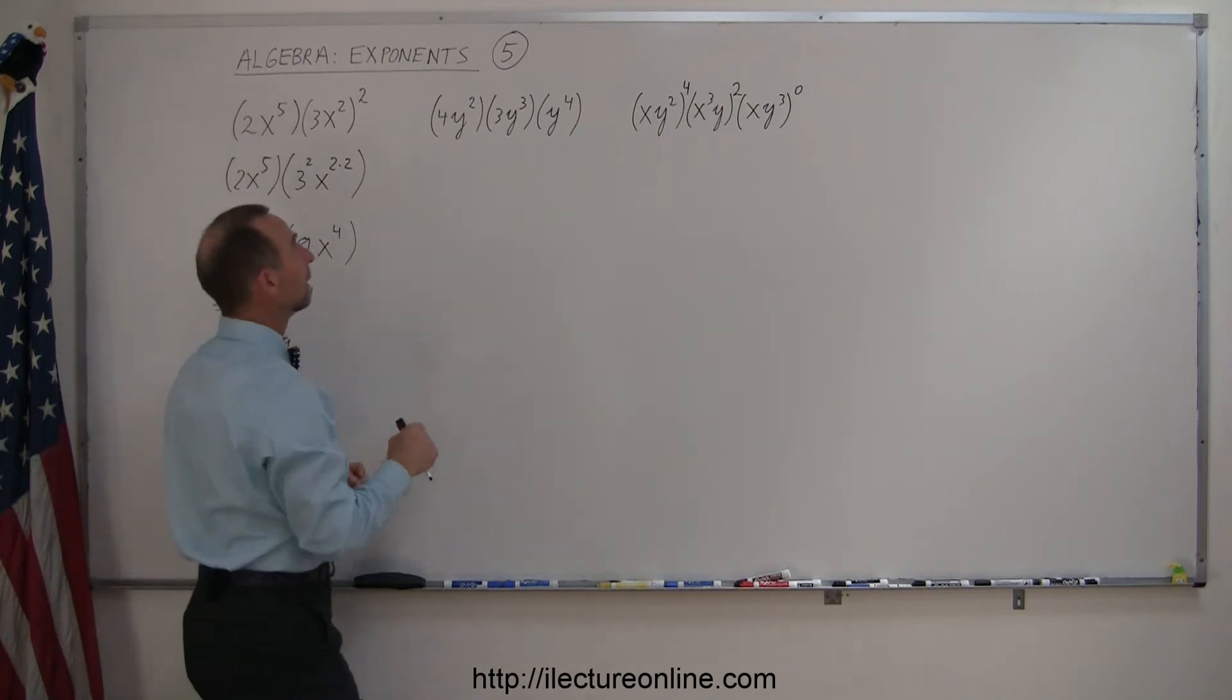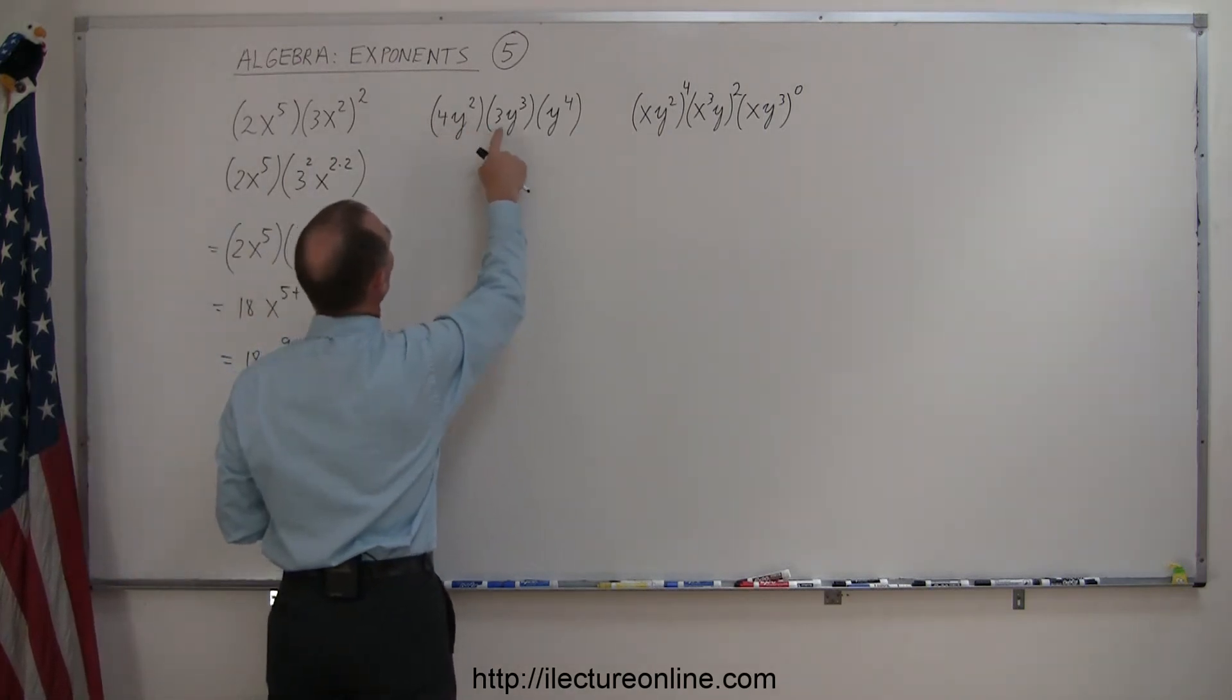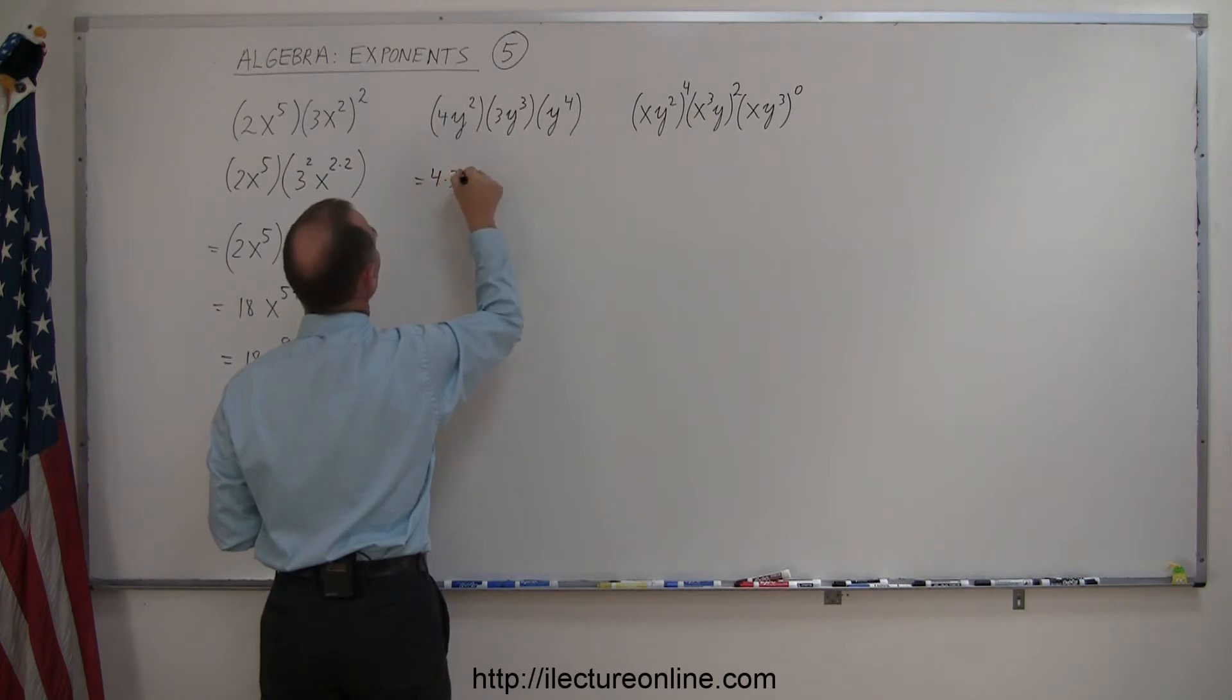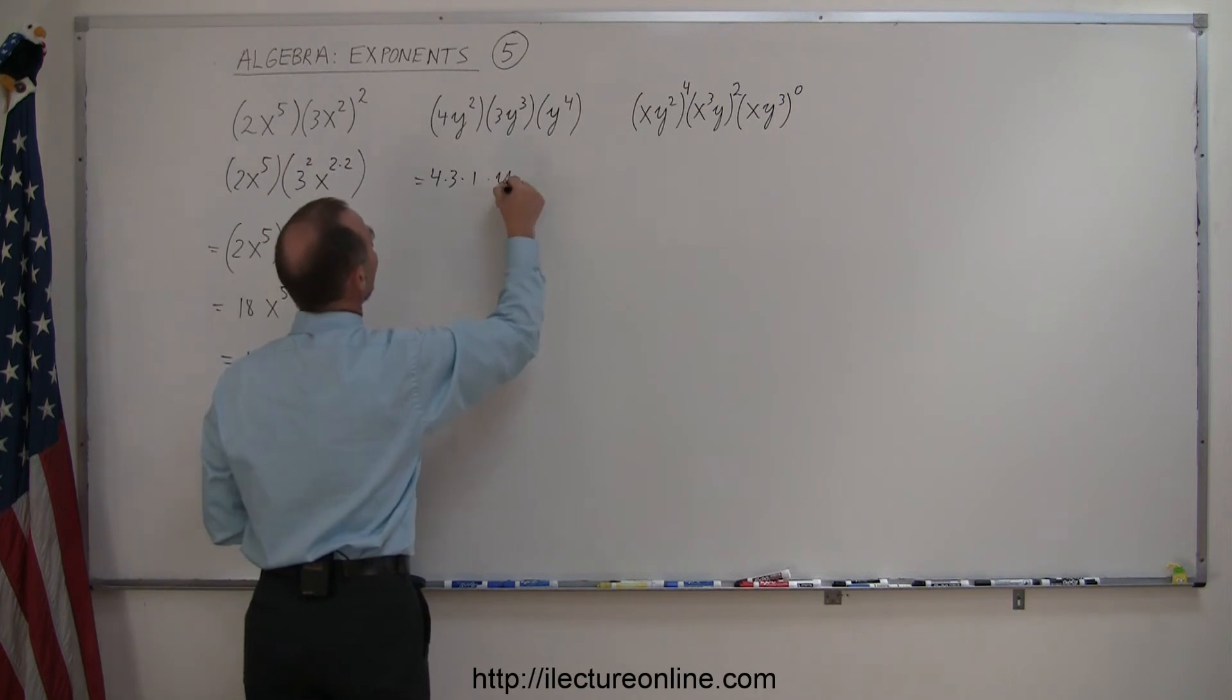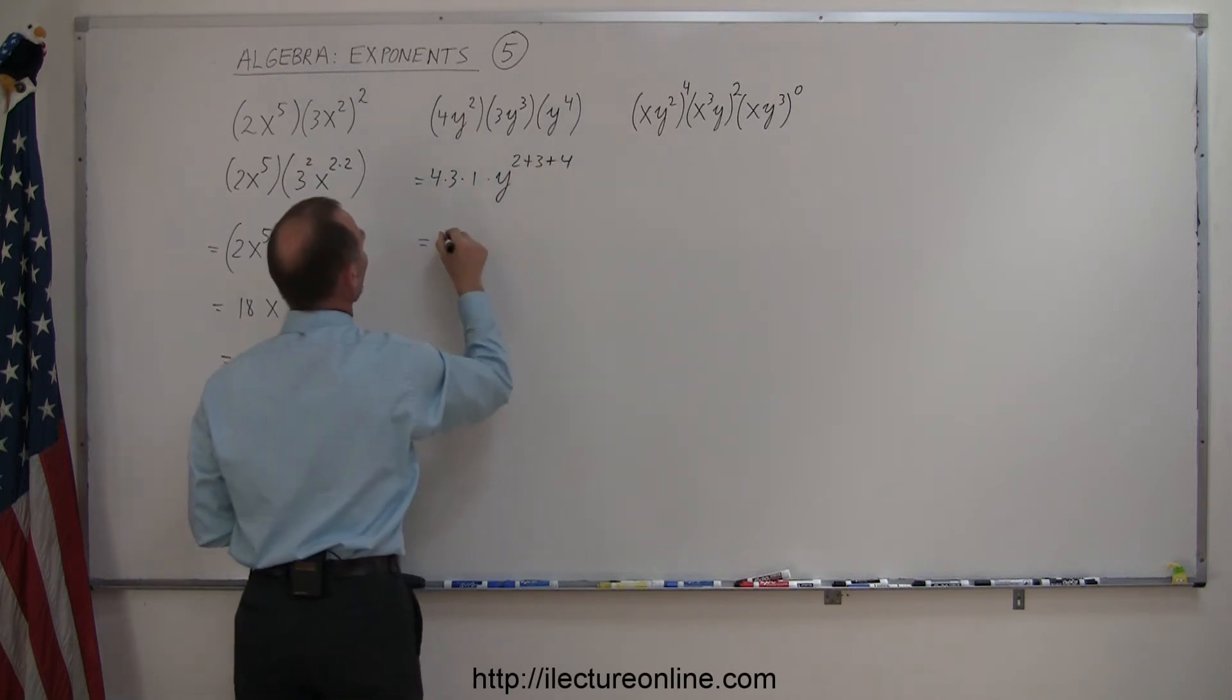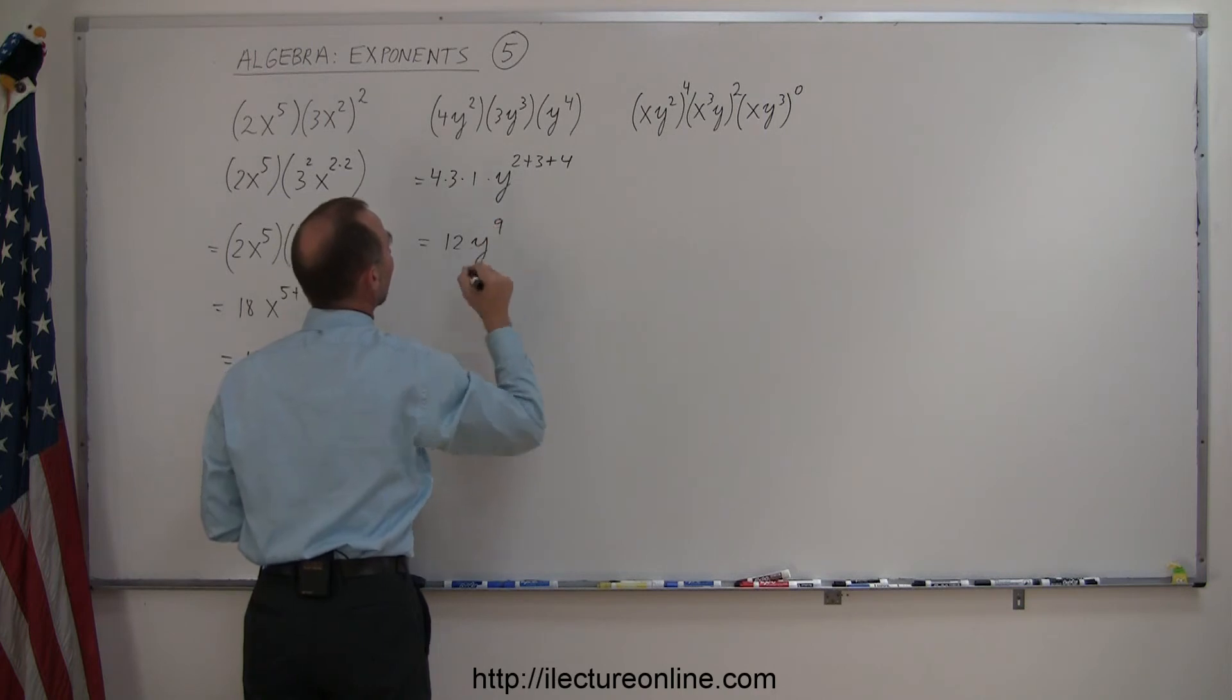On our next example, here, none of the numbers are raised to an exponent. So this becomes simply 4 times 3 times 1, because the number in front there is like a 1, times y to the, and now we simply add exponents. So this is 2 plus 3 plus 4, and so this becomes 12y to the 5 plus 4 is 9 power.